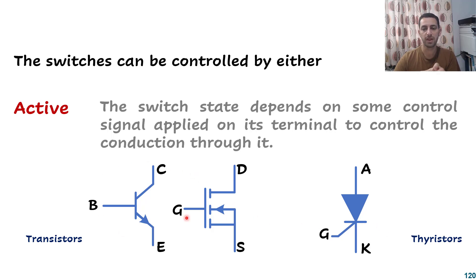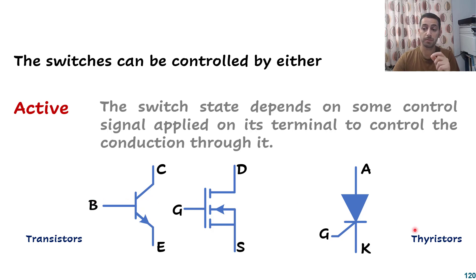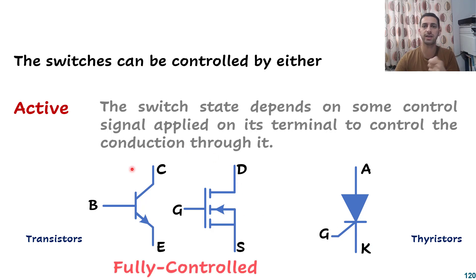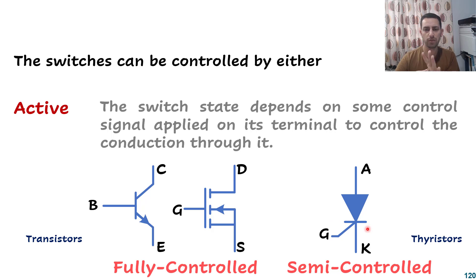All of these active examples have a third terminal waiting for a signal, but there are small differences between transistors and thyristors. For transistors — MOSFETs and IGBTs — I can turn them on and off by applying an on signal and an off signal. But for the thyristor, I can turn it on by applying a positive signal on the gate referenced to the cathode, but I can't turn it off. If I remove that signal, the thyristor keeps conducting until a turn-off condition applies, like the anode voltage becoming less than the cathode. So transistors are called fully controlled, while the thyristor is semi-controlled.